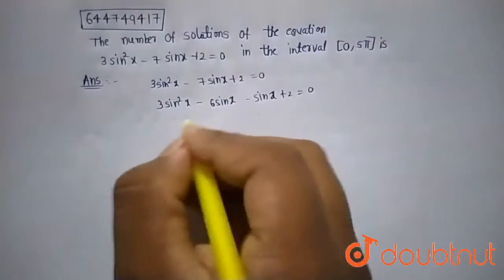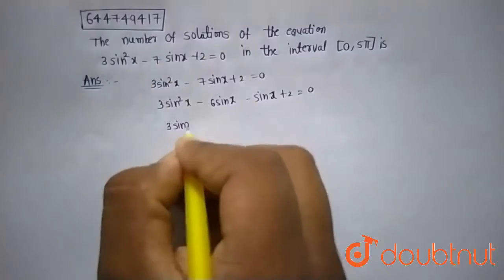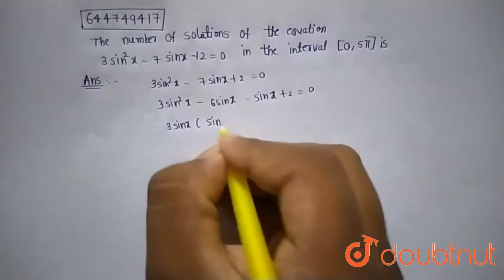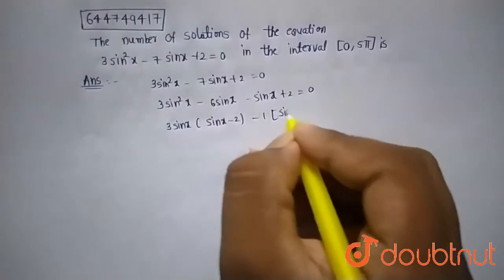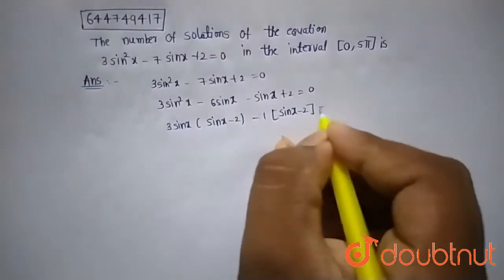Let's take out 3sin x common from the first two terms. So that will be 3sin x(sin x - 2). And let's take out -1 common from the last two terms. So that is (sin x - 2) = 0.